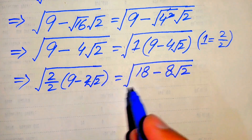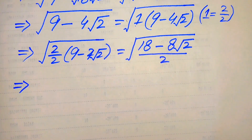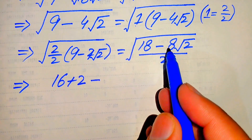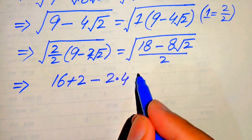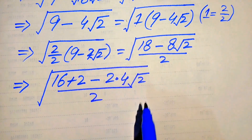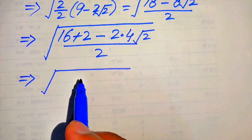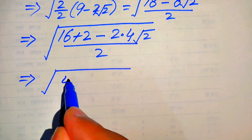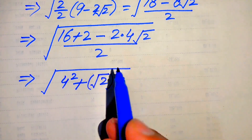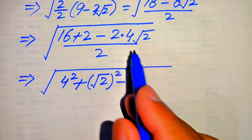In the next step we need more simplifications. We break 18 as 16 plus 2, and we write 8 as 2 multiplied by 4, with square root of 2 — the whole term divided by 2. We rewrite these terms as: square root of (4 squared plus (square root of 2) squared minus 2 times 4 times square root of 2), all divided by 2.